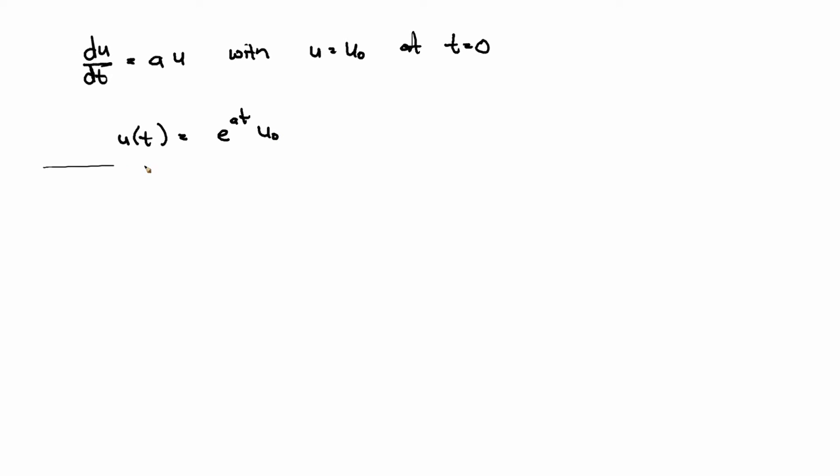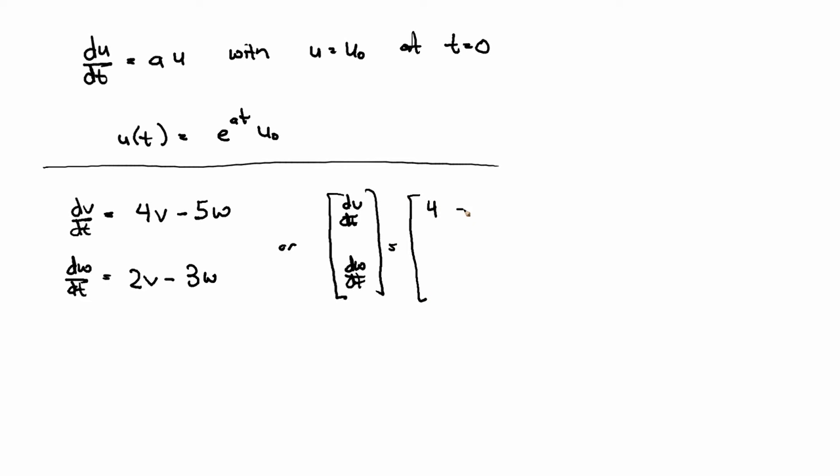What if I have dv/dt is equal to 4v minus 5w, and I have dw/dt is equal to 2v minus 3w. Or I might choose to write that like this: dv/dt, dw/dt is equal to [4 -5; 2 -3] times [v; w].